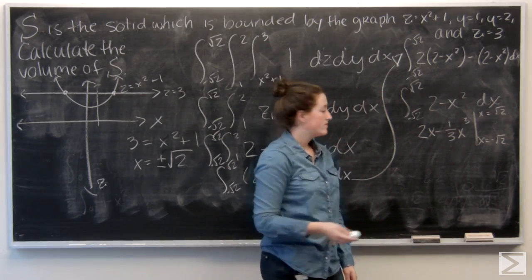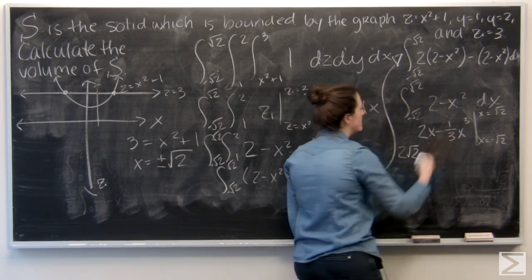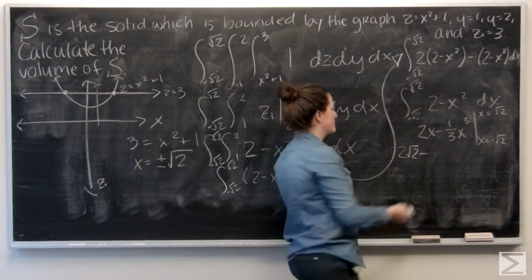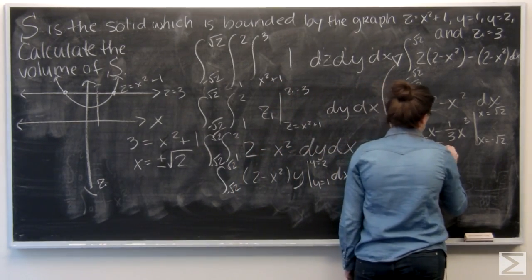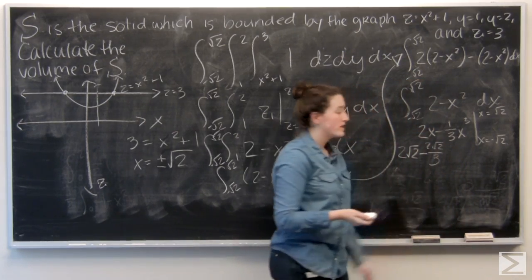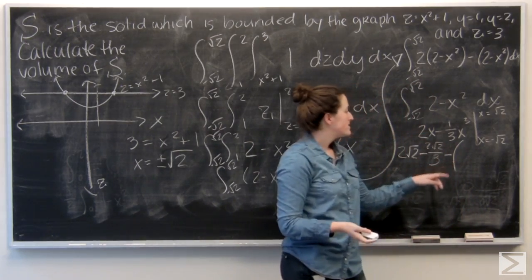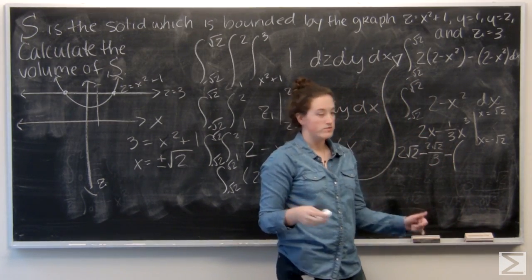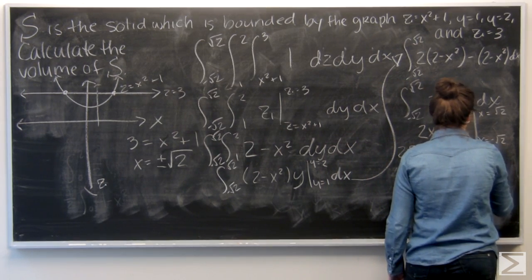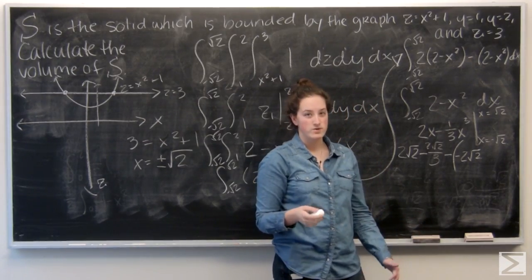Let me plug in root 2. So 2 root 2 minus, and root 2 to the third is going to be 2 square root of 2. So 2 times negative root 2 is negative 2 square root of 2, and negative root 2 to the third is negative 2 square root of 2.